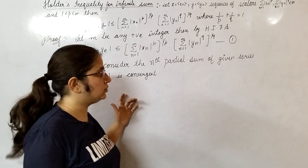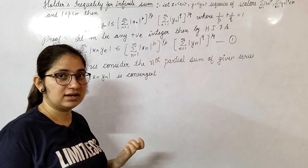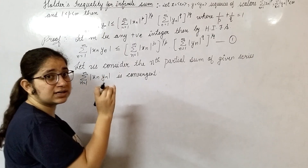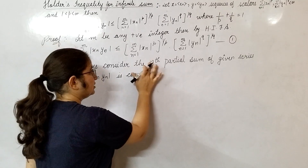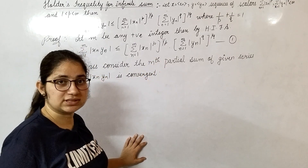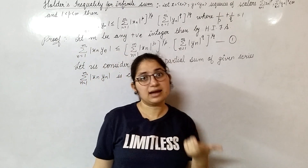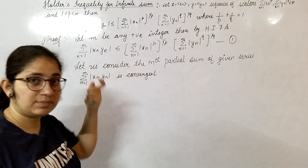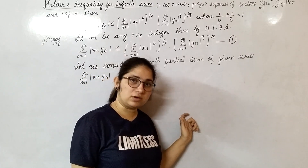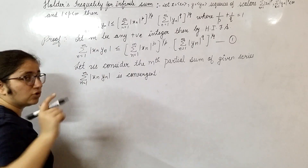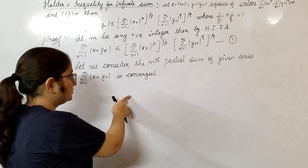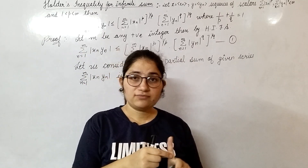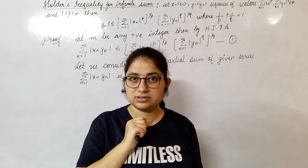If this is confusing, pause the video and think about it, or repeat this portion. What I am saying is: the mth partial sum is convergent. There is a result that every monotonically increasing and bounded series is always convergent. Since the series are independently bounded, their product is also bounded, giving us monotonically increasing and bounded — therefore convergent.